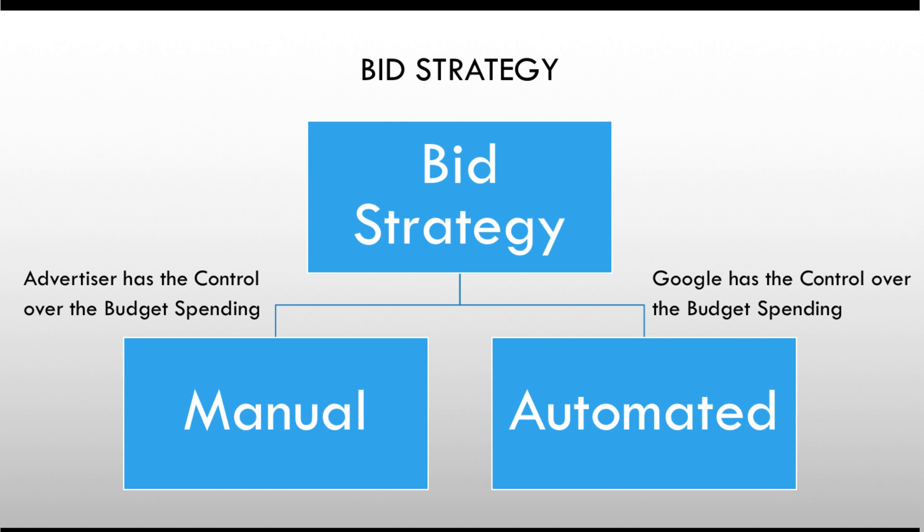This is like an autopilot mode and should only be used when you are experimenting with your campaigns and want to try out something different, or you have a very huge budget. In our campaigns, we are going to use manual CPC as a bid strategy.